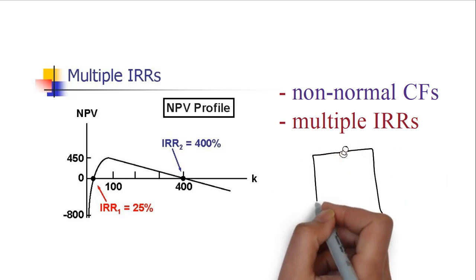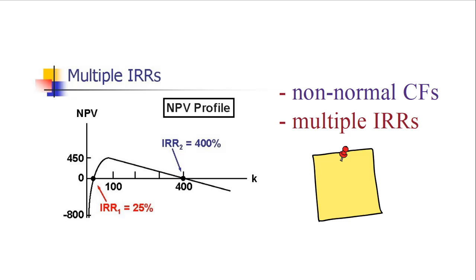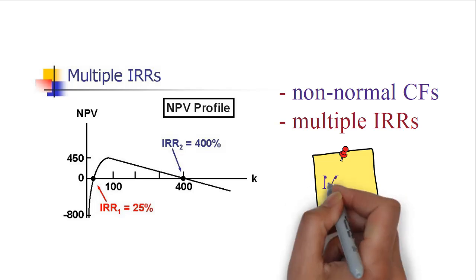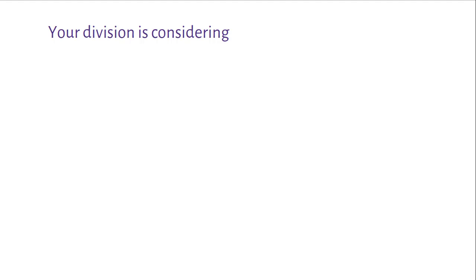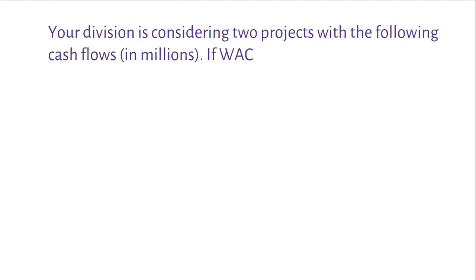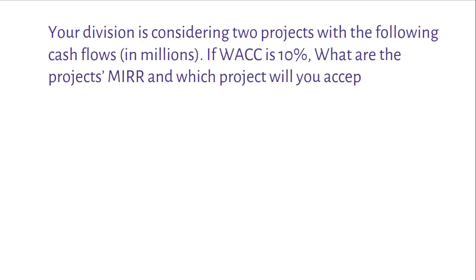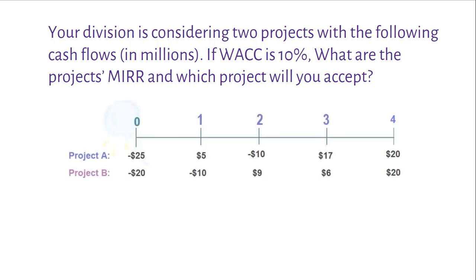In order to avoid multiple IRR problems, it is always better to use MIRR technique while accepting or rejecting a project. Here is an example. Your division is considering two projects with the following cash flows in millions. If WACC is about 10%, what are the projects' MIRR and which project will you accept?